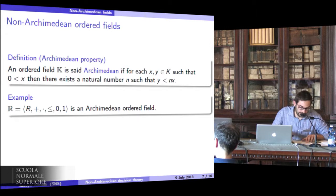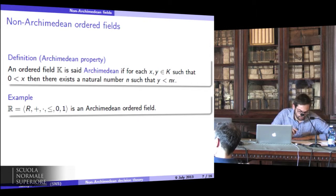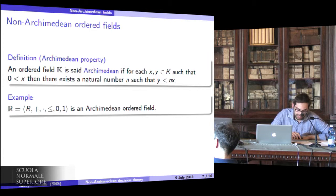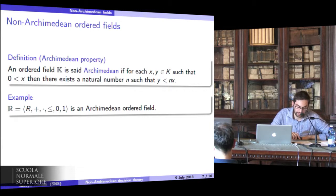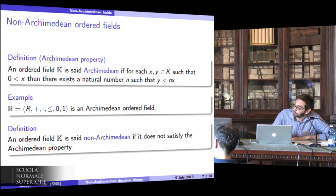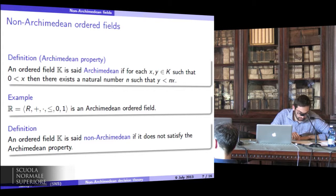We can now define a non-Archimedean field. An ordered field k is Archimedean if for x, y in k such that 0 is less than x, then there is a natural number n such that y is less than nx. So in an Archimedean field, given an element x, we can always find an element that is greater than x. An ordered field k is non-Archimedean if it doesn't satisfy the Archimedean property.